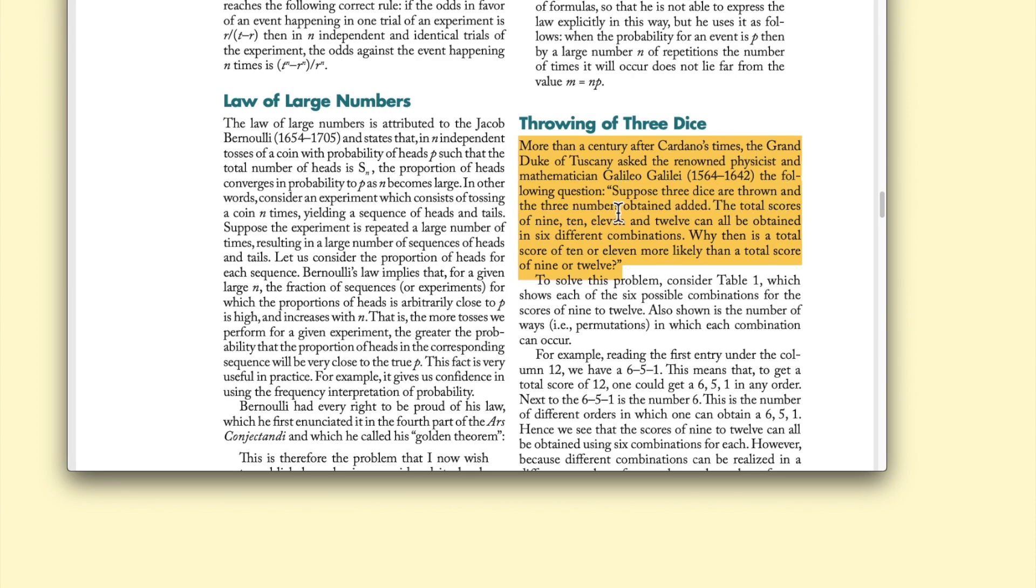Suppose three dice are thrown and the three numbers obtained added. The total scores of 9, 10, 11, and 12 can all be obtained in six different combinations.